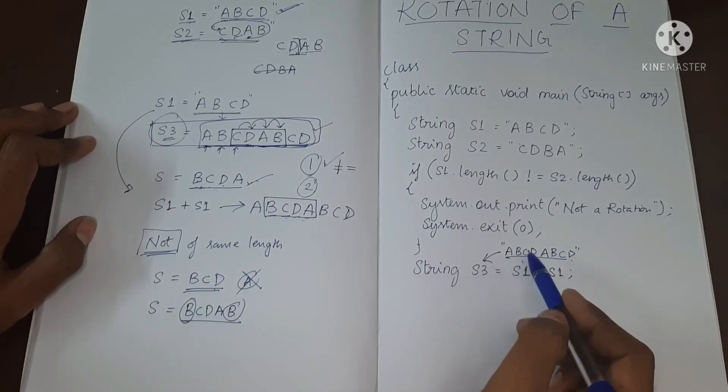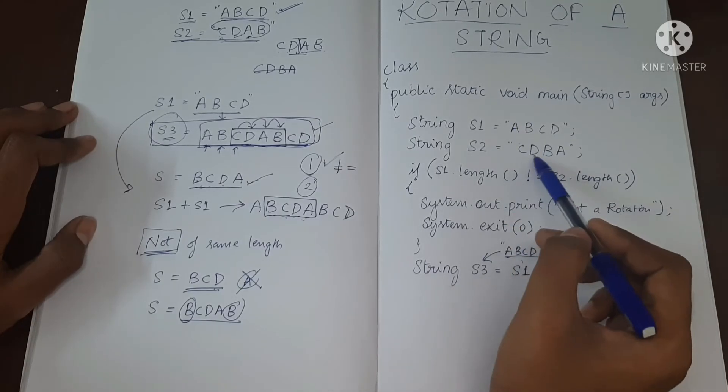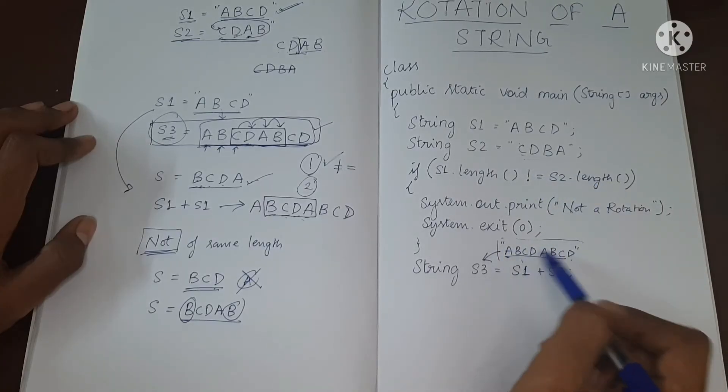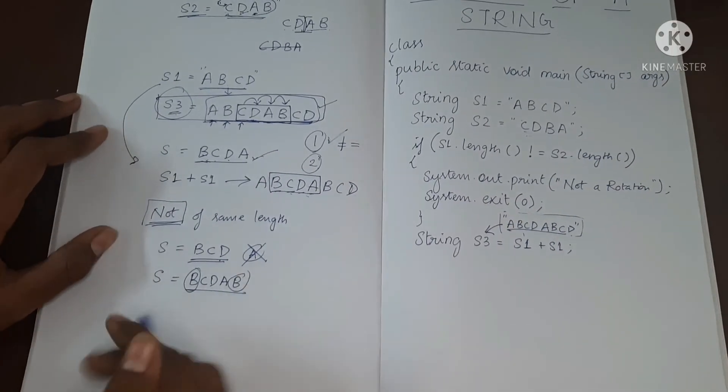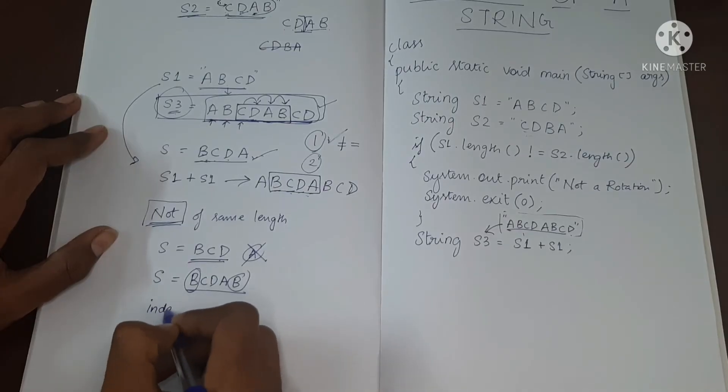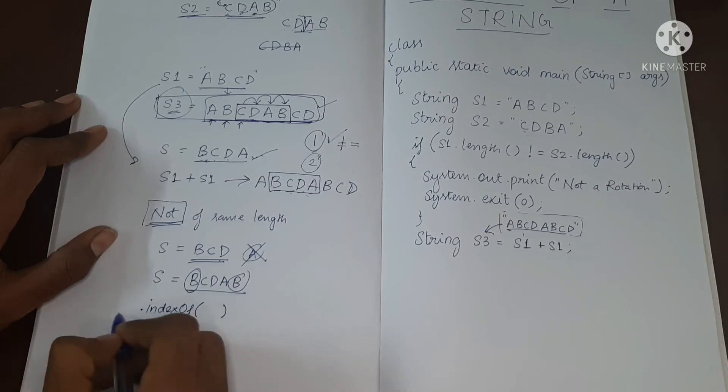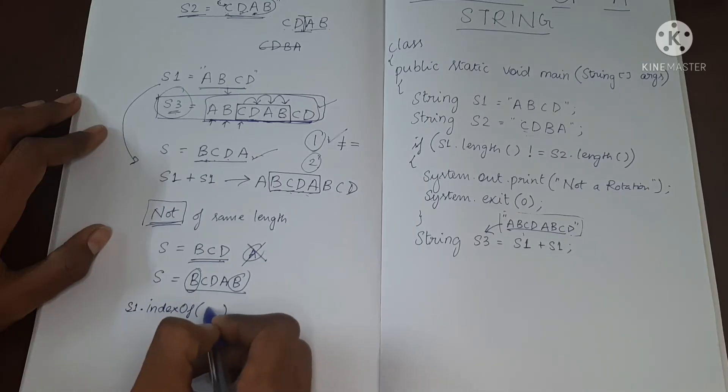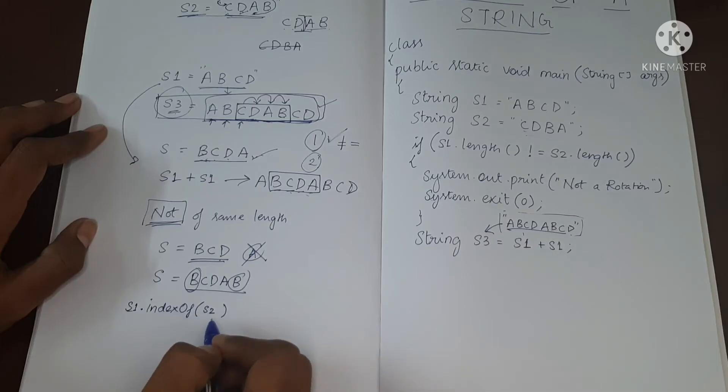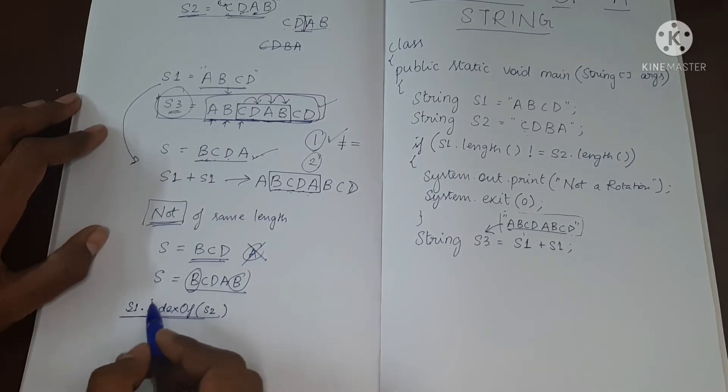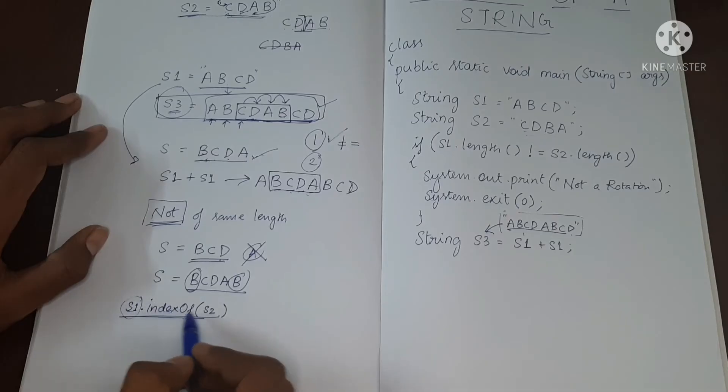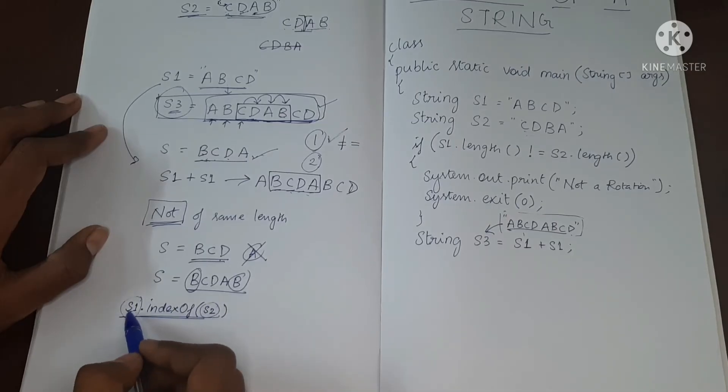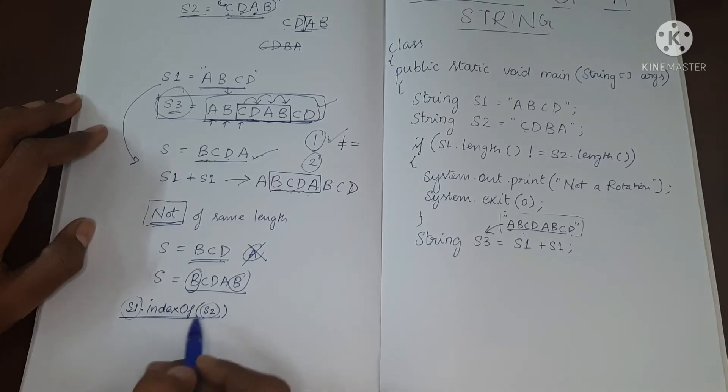Now we have to check whether S2 is present inside this new string. So we'll be using something called indexOf. So here we'll have one string, and here we'll have some other string. What it will return is if this S1 contains S2 in some of the index location, then it will return the index.